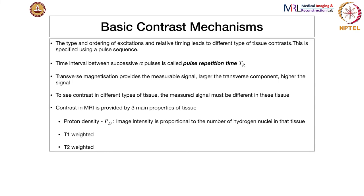TE and TR determine contrast. The basic contrast mechanisms are T1, T2, and proton density. The ordering of excitations and relative timing lead to different types of tissue contrast — this is what is specified using a pulse sequence. The time interval between two successive alpha pulses is the repetition time TR. Only the transverse magnetization provides the measurable signal; the larger the transverse component, the higher the signal. For contrast in different types of tissue, the measured signal must be different in those tissues.